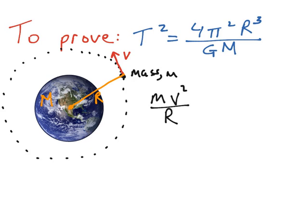That centripetal force has to balance with the gravity force in order for the satellite to remain in orbit. The formula for the gravity force comes from Newton's universal law of gravity, which is the universal gravity constant G multiplied by the two masses — the mass of the Earth, capital M, and the mass of the satellite, small m — divided by the radius squared of the orbit.